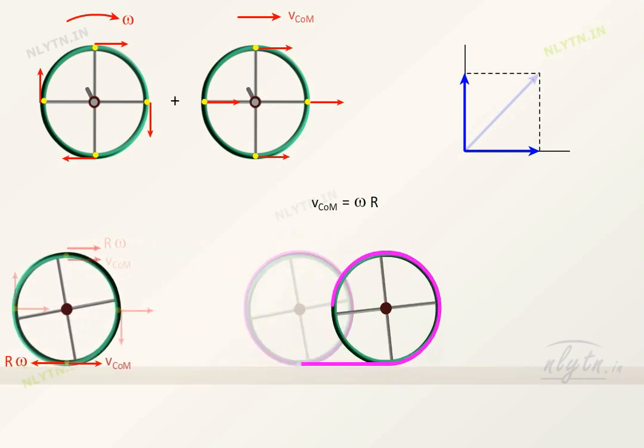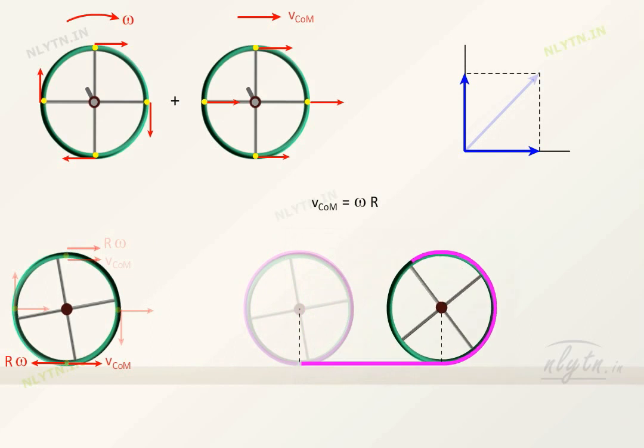we can say that the distance moved by its center of mass will be equal to this length of its circumference, which can be written in terms of angle theta as r into theta.